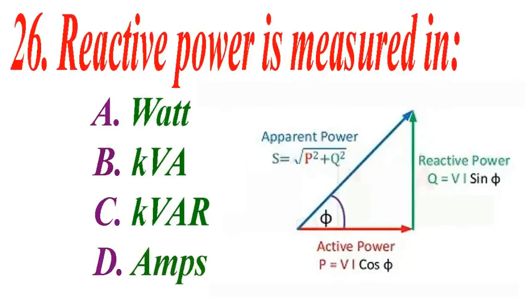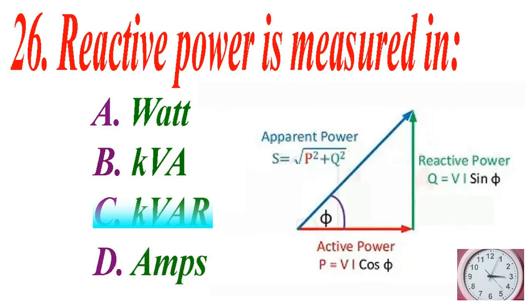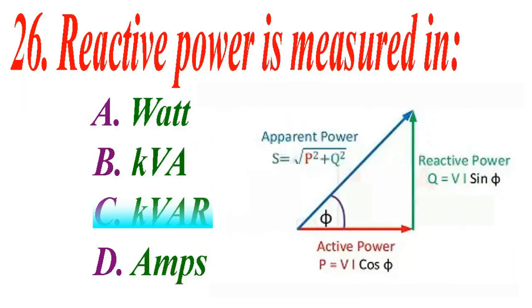Reactive power is measured in: A watt, B kilovolt ampere, C kilovolt ampere reactive (KVAR), D amps. The correct answer is C kilovolt ampere reactive.